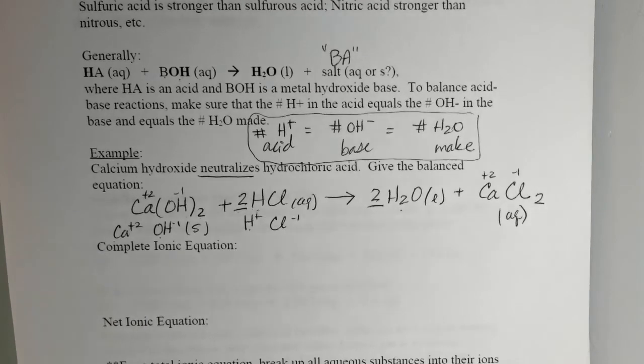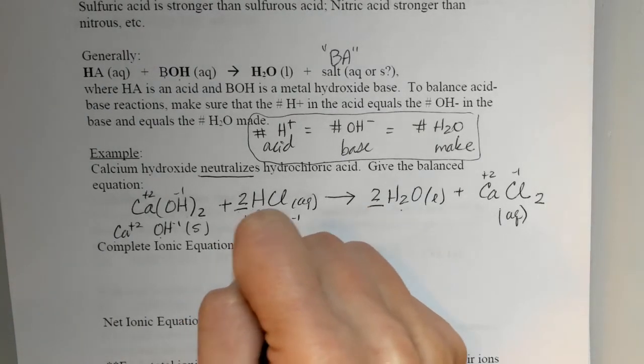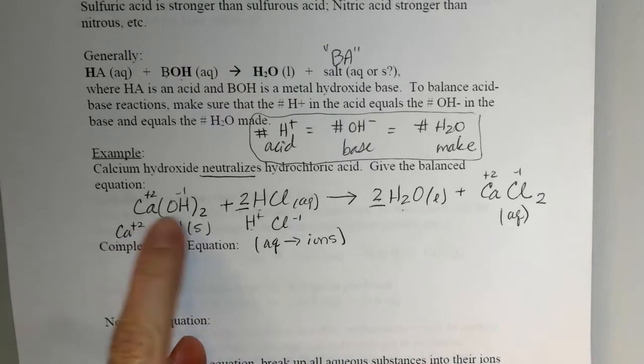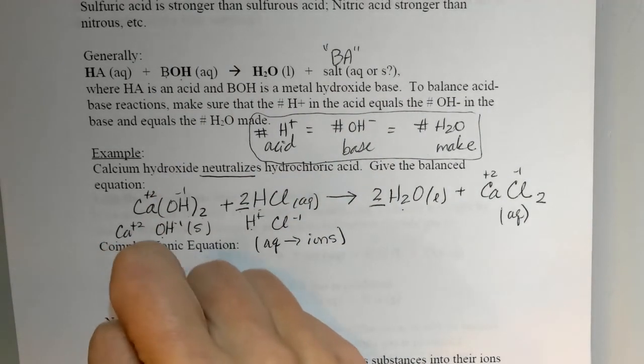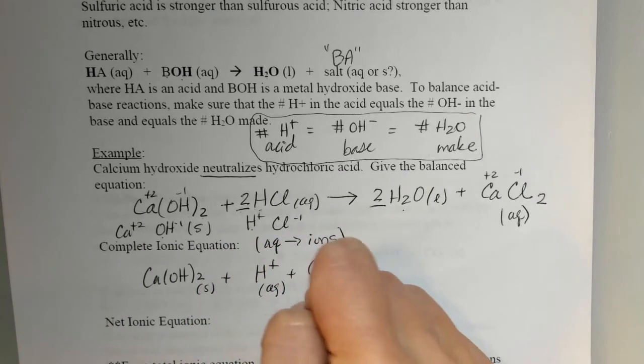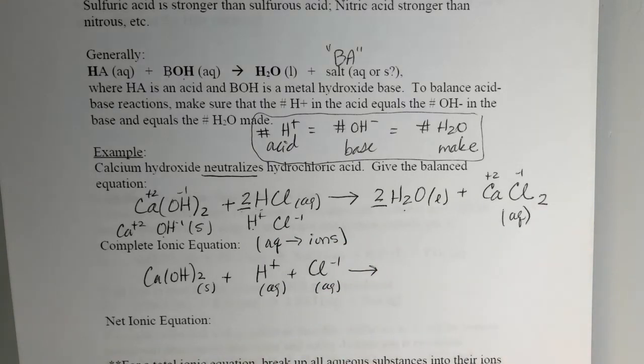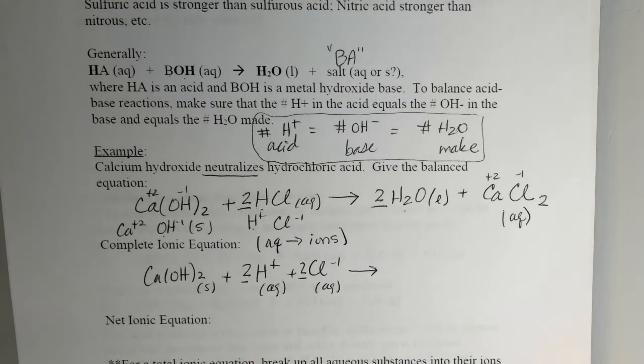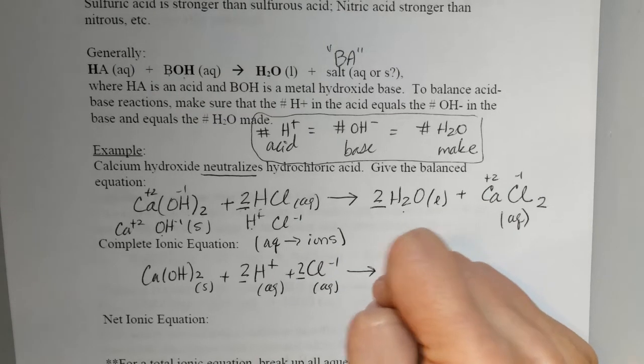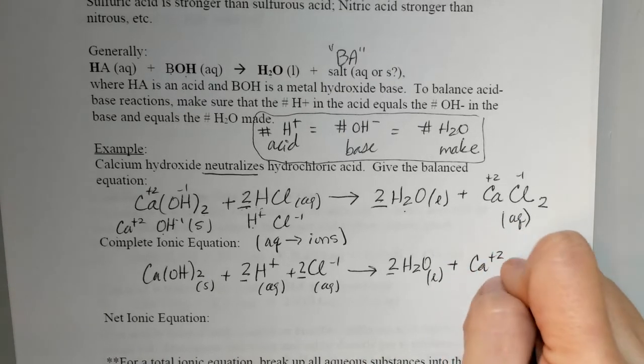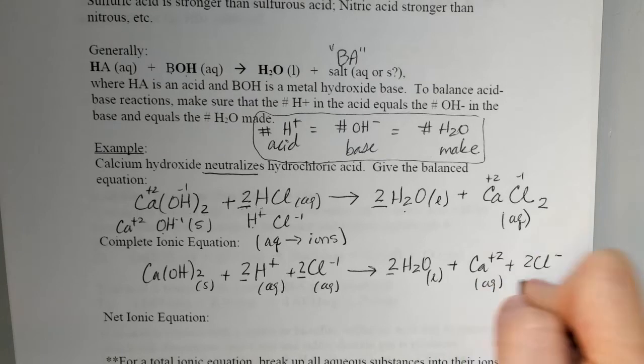Now for the ionic equation, what we saw with the previous video is anything aqueous breaks up into ions. Solids don't. They stay together. And liquids also don't. They stay together. So what we would have here is the calcium hydroxide would stay together as a solid. The hydrochloric acid would break up because it's aqueous, so the hydrogen ions and the chloride ions would break apart. And we know strong acids 100% do that. There would be two of each of those from the balanced equation because of that coefficient in front. On the product side, the waters stay together because it's a liquid, not aqueous. And then on the product side, the calcium and the two chlorides would break apart because they're aqueous.